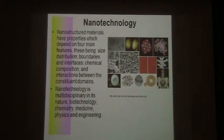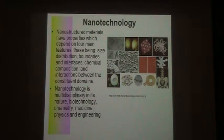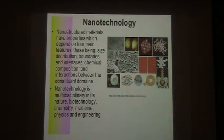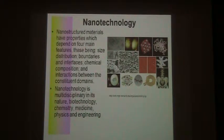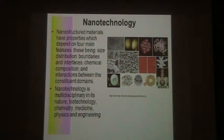Nanostructural material properties depend on four main features: size, distribution, boundaries and interfaces, chemical compositions, and interactions between constituent domains. We have to always take these four main features into account. Nanotechnology is a very multidisciplinary field and we have to collaborate with many experts from other areas.